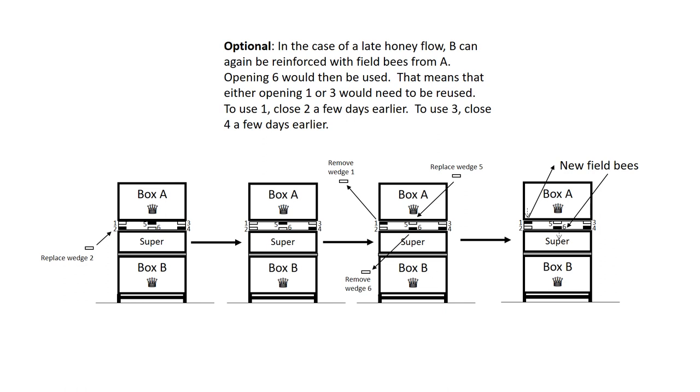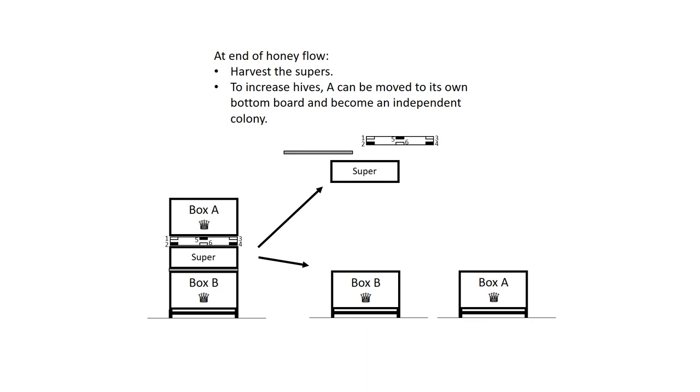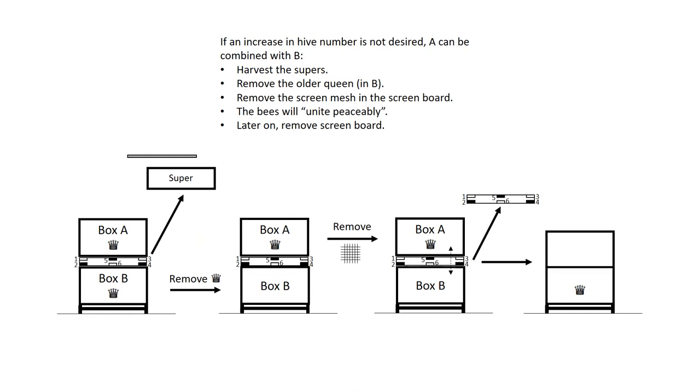At end of honey flow, harvest the supers. To increase hives, A can be moved to its own bottom board and become an independent colony. If an increase in hive number is not desired, A can be combined with B. Harvest the supers, remove the older queen in B, remove the screen mesh in the screen board. The bees will unite peaceably. Later on, remove the screen board.